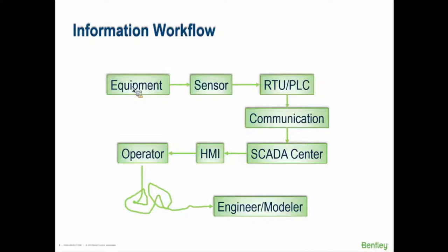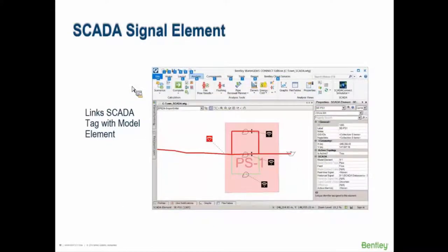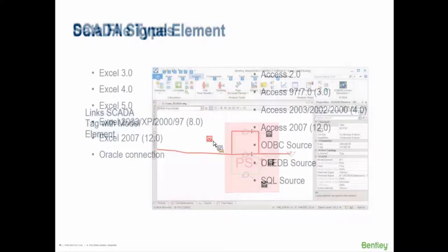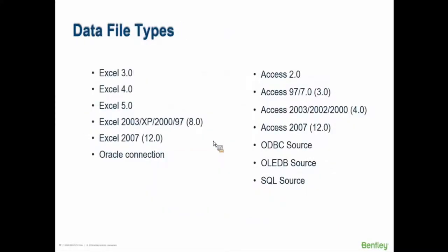That's what the data signal elements are. You place them down in the model — they're basically the connection between a model element, in this case a pipe, and a signal. This represents, say, the flow in that pipe. That signal then goes out and connects to your SCADA data. So these things automatically bring in SCADA data rather than going through that manual process.